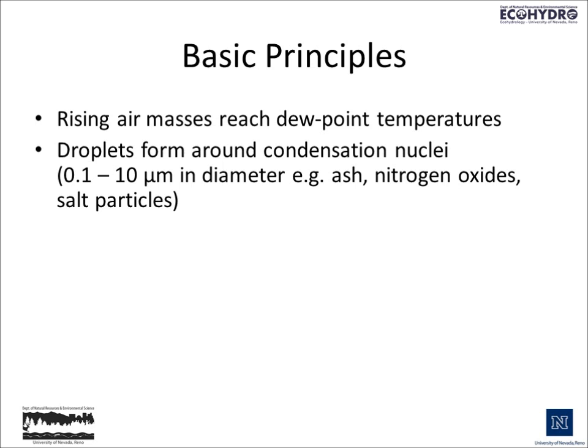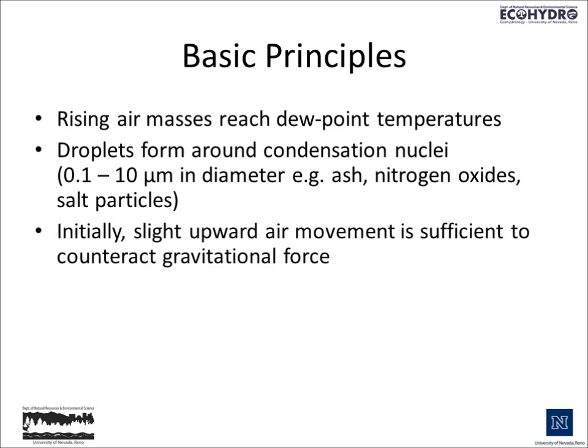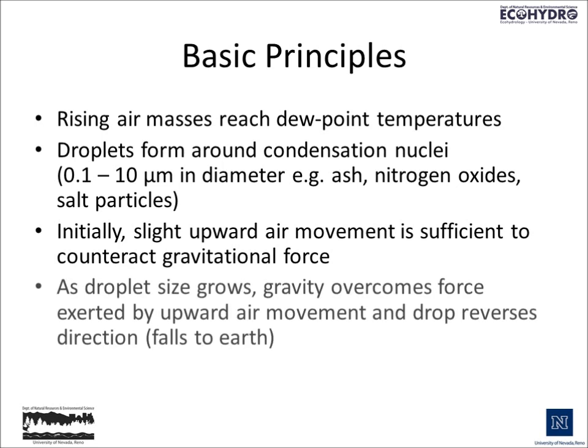These condensation nuclei are very small — between a tenth and ten microns in diameter — and they could consist of things like ash, nitrogen oxides, and salt particles. Initially, only a slight upward air movement is sufficient to counteract gravitational force. But as droplet size grows, gravity overcomes the upward air movement, and drops reverse direction and fall to earth. This all depends on condensation occurring to the point where sufficient volume and mass have been developed to overcome the upward force inside clouds and cause raindrops to fall out.